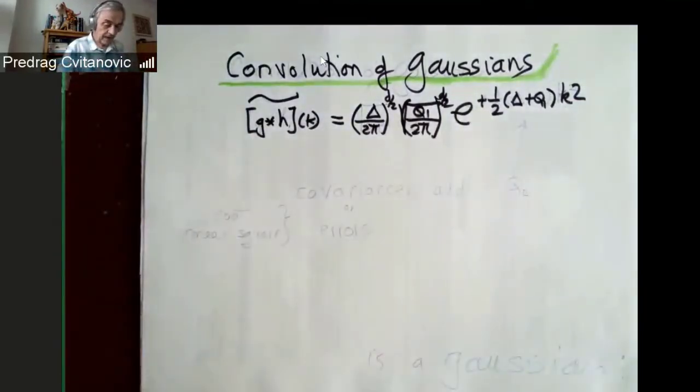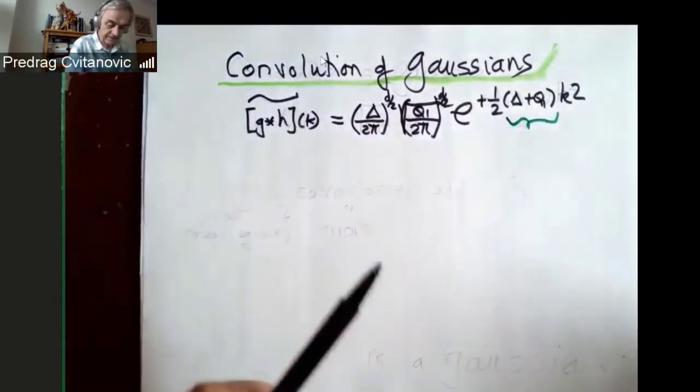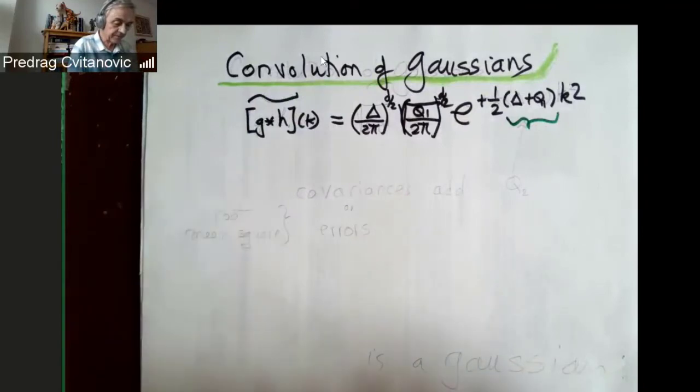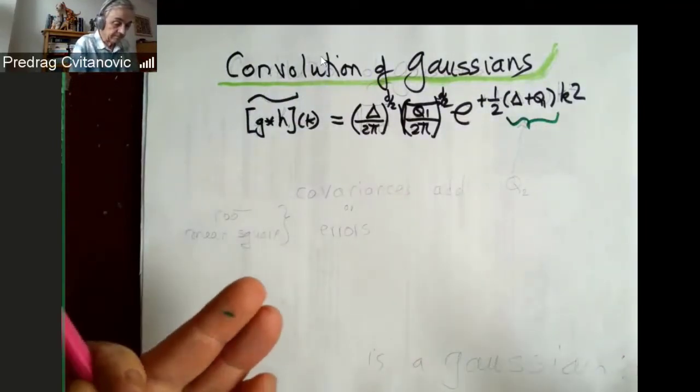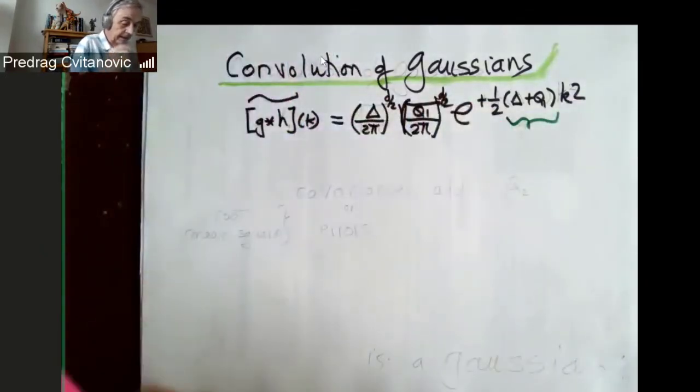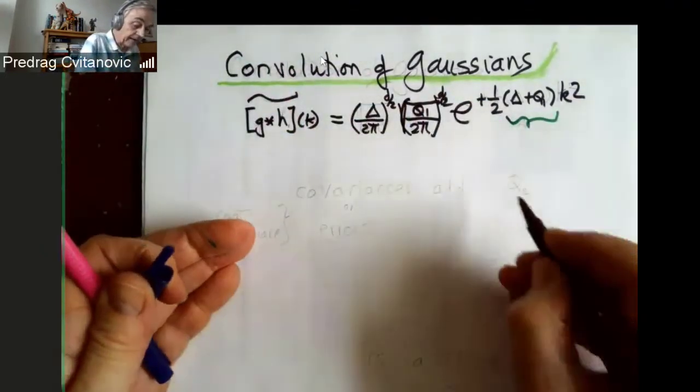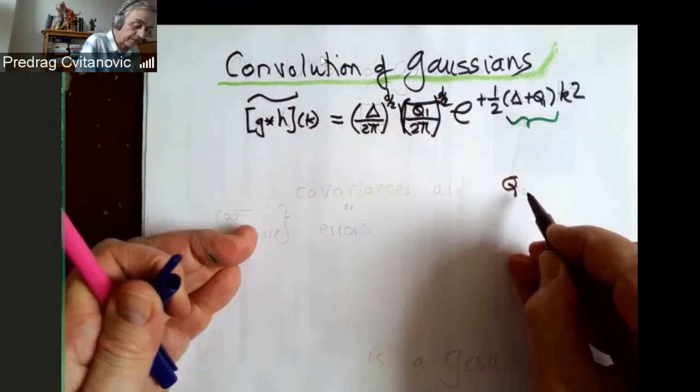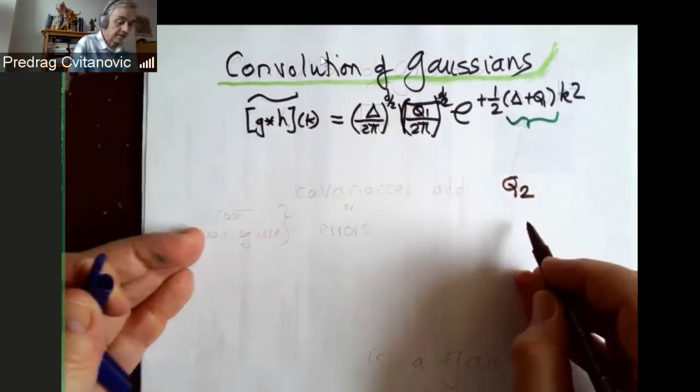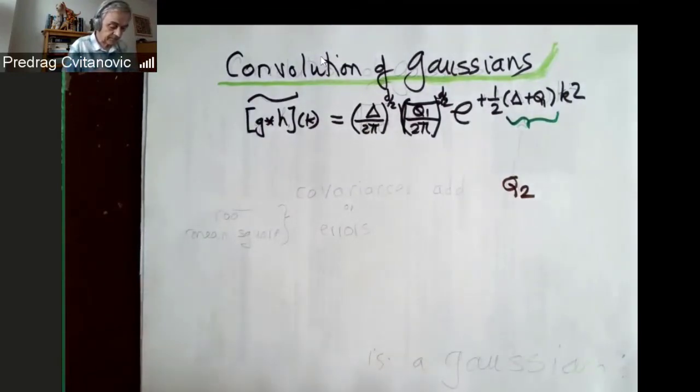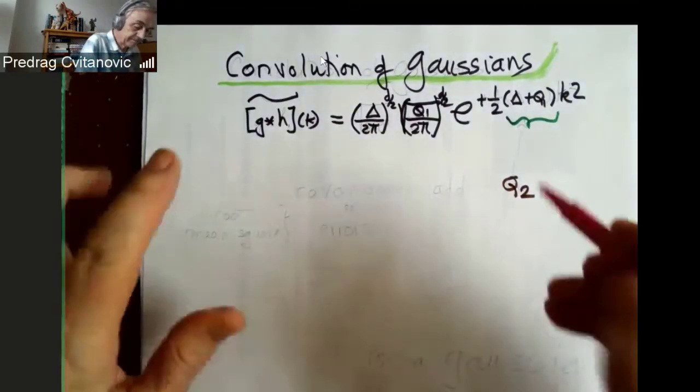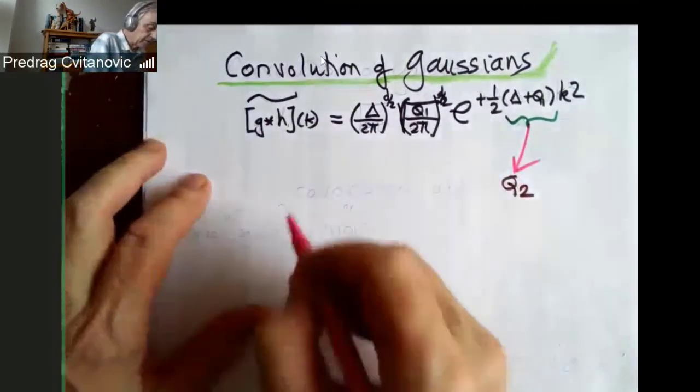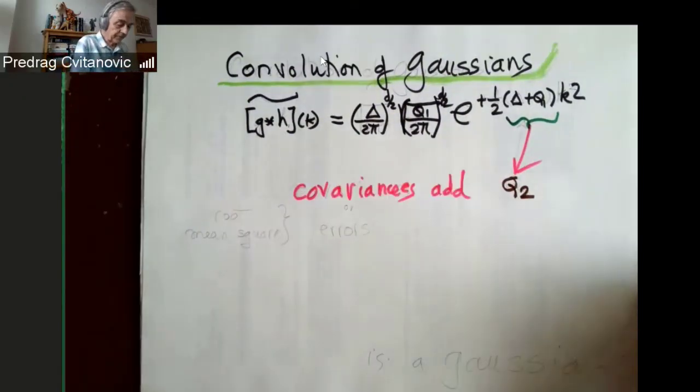So what happens is this is covariance of the convolution. It's a Gaussian. And the covariance of the convolution of two Gaussians, playing with each other, Q2, it's just the sum of the two guys. So the convolution of two Gaussians is a Gaussian.